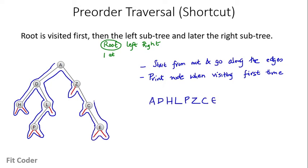And then we reach back to A. So this is our pre-order traversal. This is a quick way of writing the pre-order traversal — we just travel along the edges and print the node whenever we visit it for the first time.